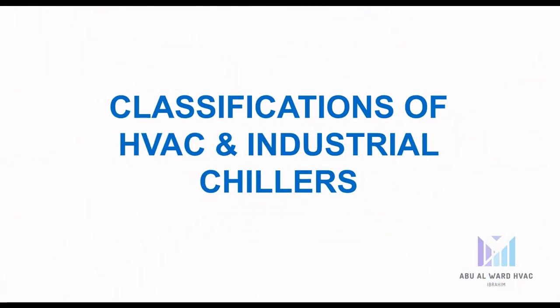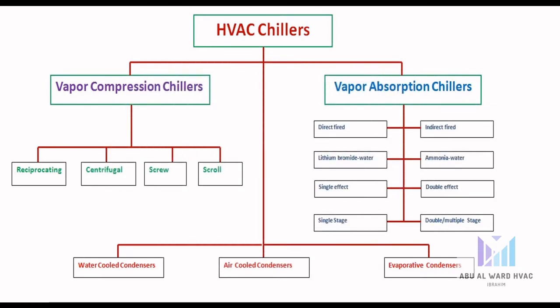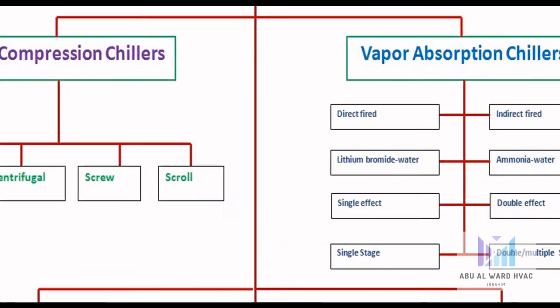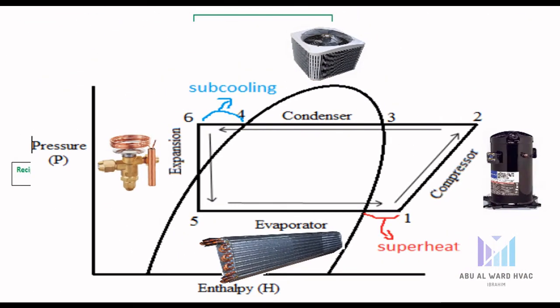Classification of HVAC and industrial chillers: according to the classification chart, we have vapor compression chillers — reciprocating, centrifugal, screw, and scroll. A second classification is by condenser cooling method: air-cooled, water-cooled, or evaporative cooling. Finally, we have vapor absorption chillers — direct fired, indirect fired, lithium bromide-water, ammonia-water, single effect, double effect, and single or multiple stage.